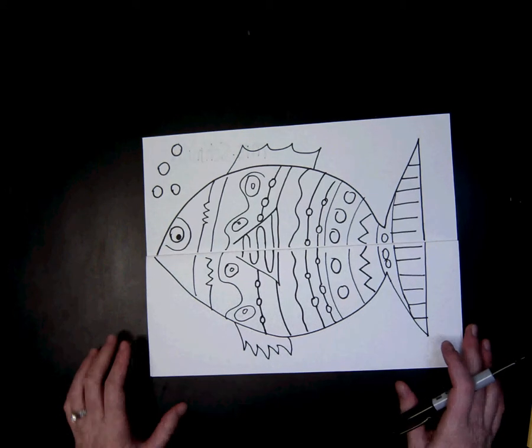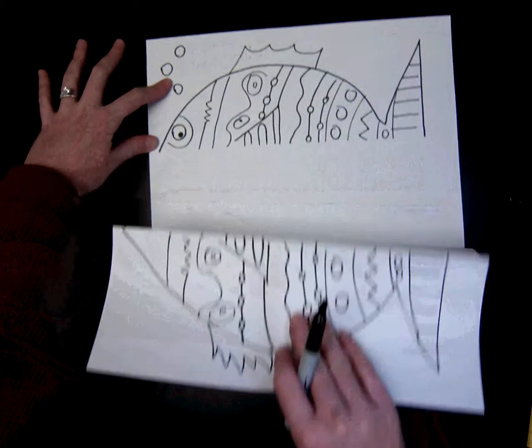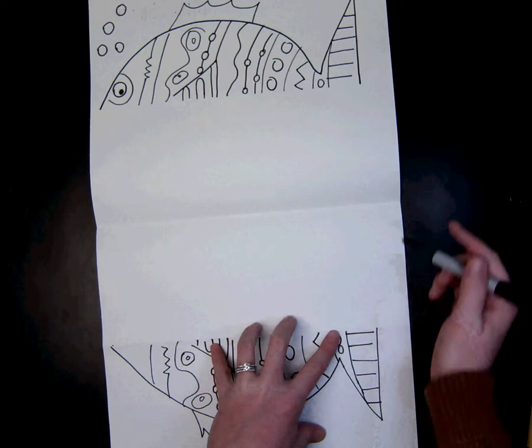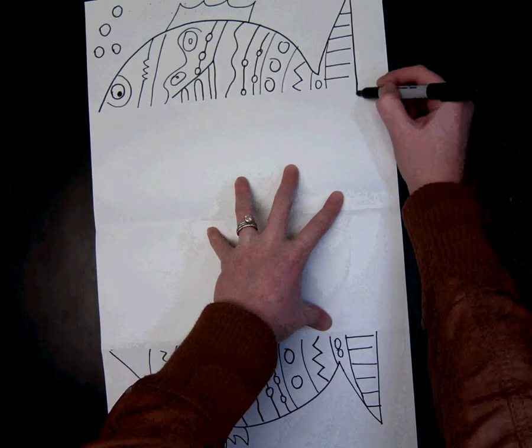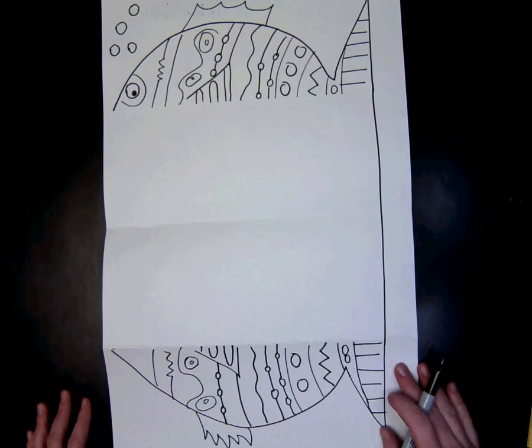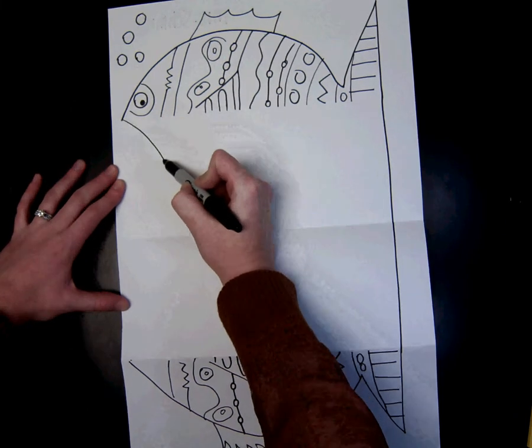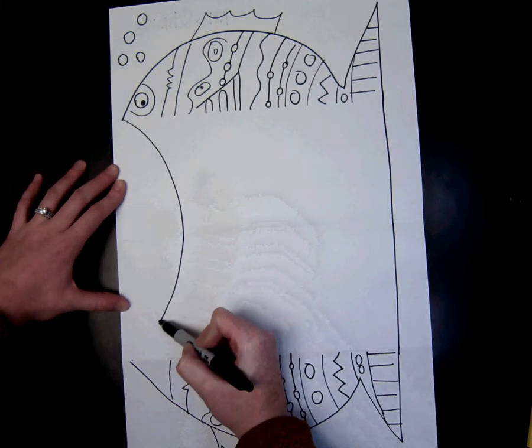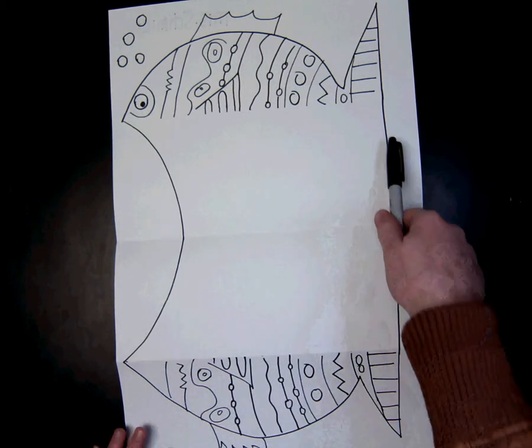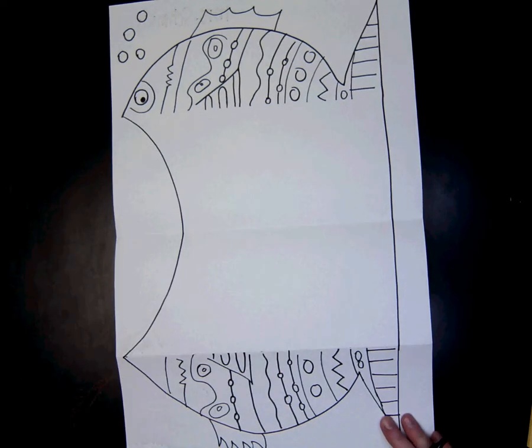Next, when you are done with the fish, you will open it up and we will do the mouth. So to do the mouth, the first thing we need to do is connect our tail so that it looks like one big fish. The next thing we are going to do is bring our mouth in like this so that we have enough room for our big, mean teeth. So go ahead and connect these two, your tail and your mouth.